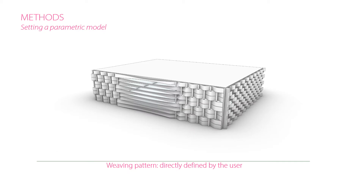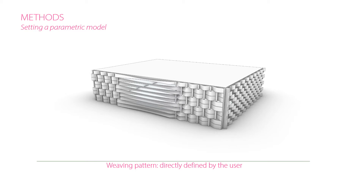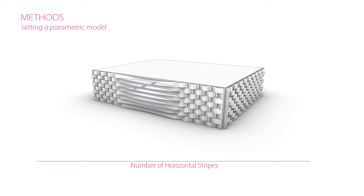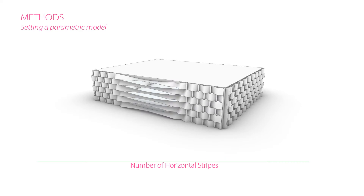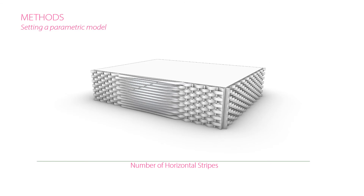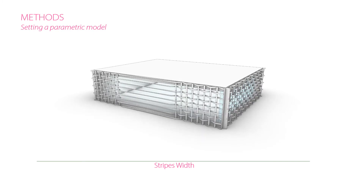The generation model helps architects define different types of weaving patterns, as shown in this small video. The architects can also control the number of horizontal stripes, the rotation of the stripes, particularly when they are not weaved, and finally, the width of the stripes.